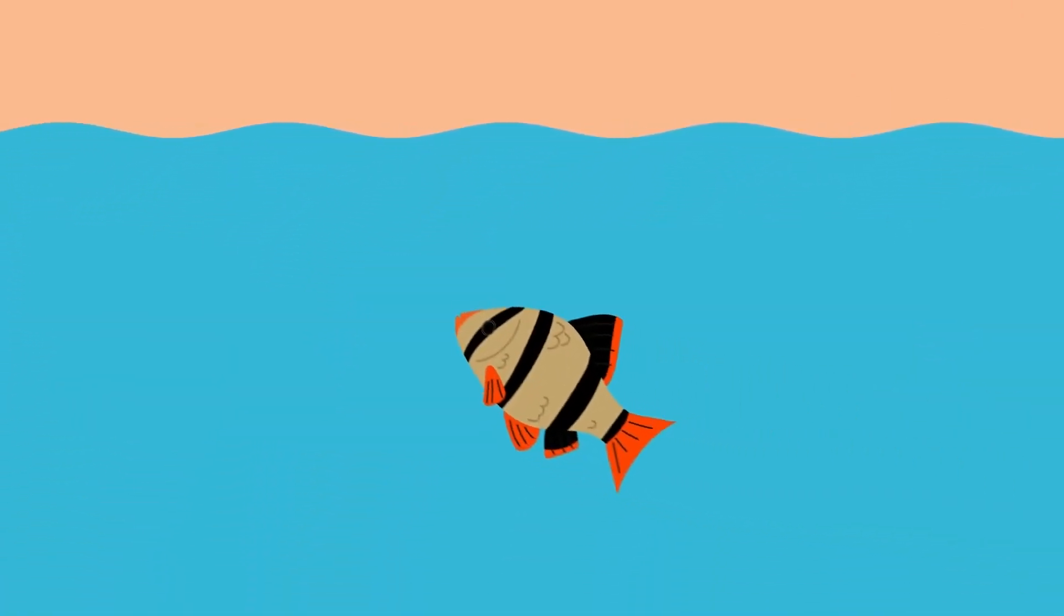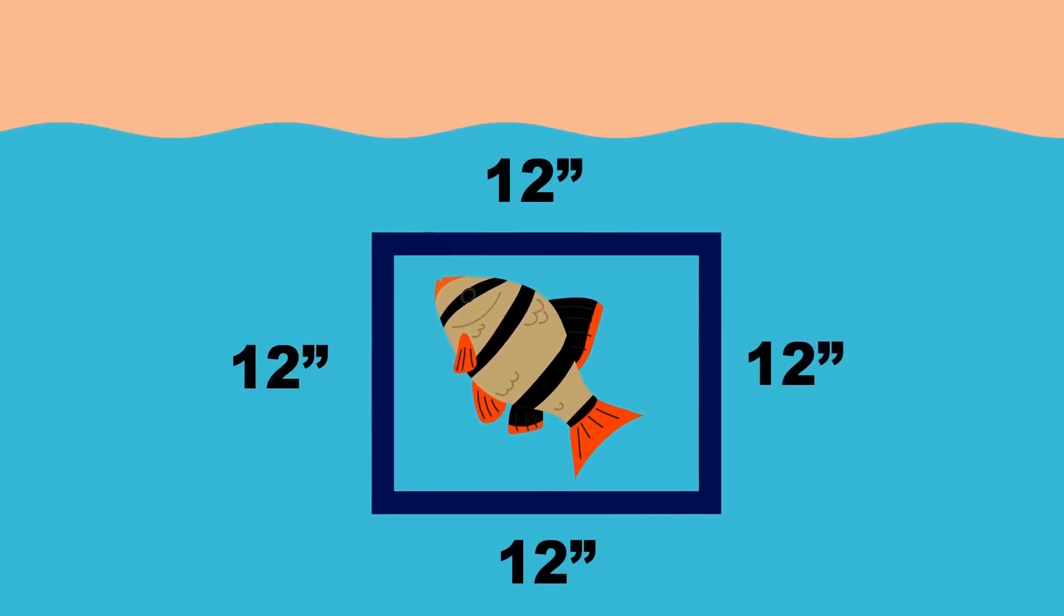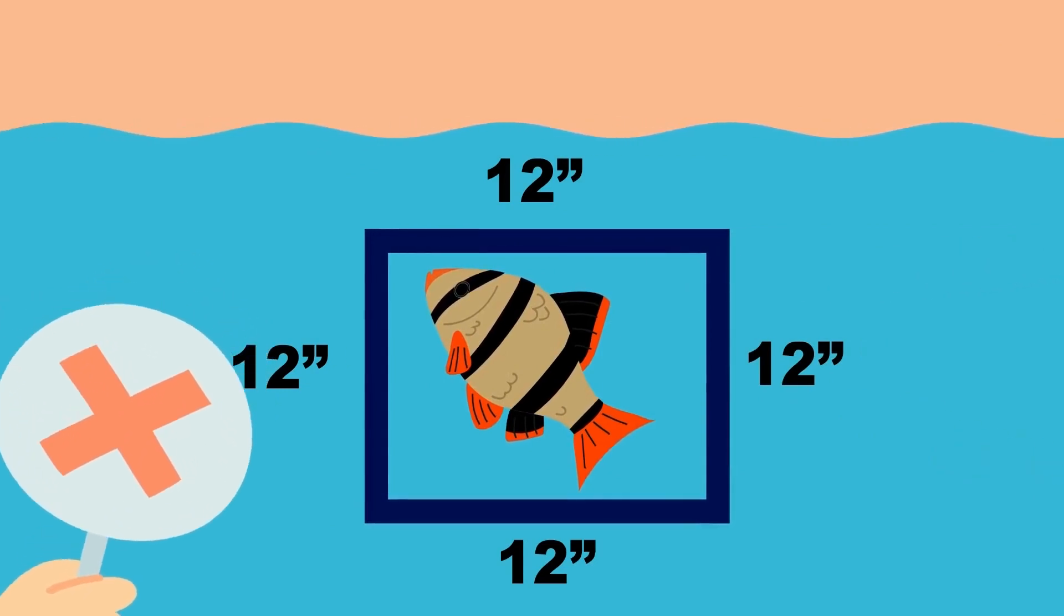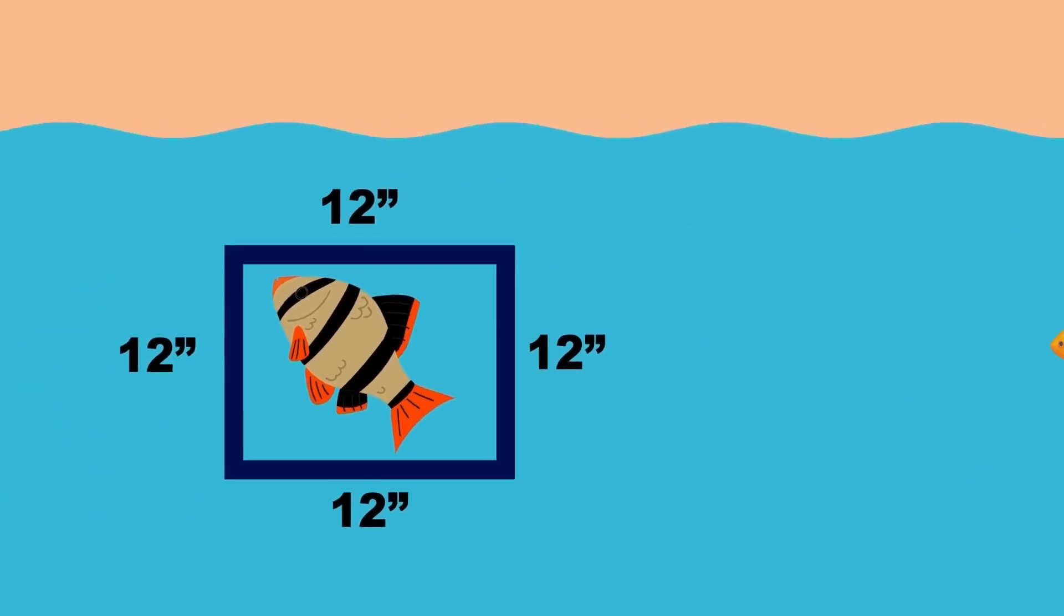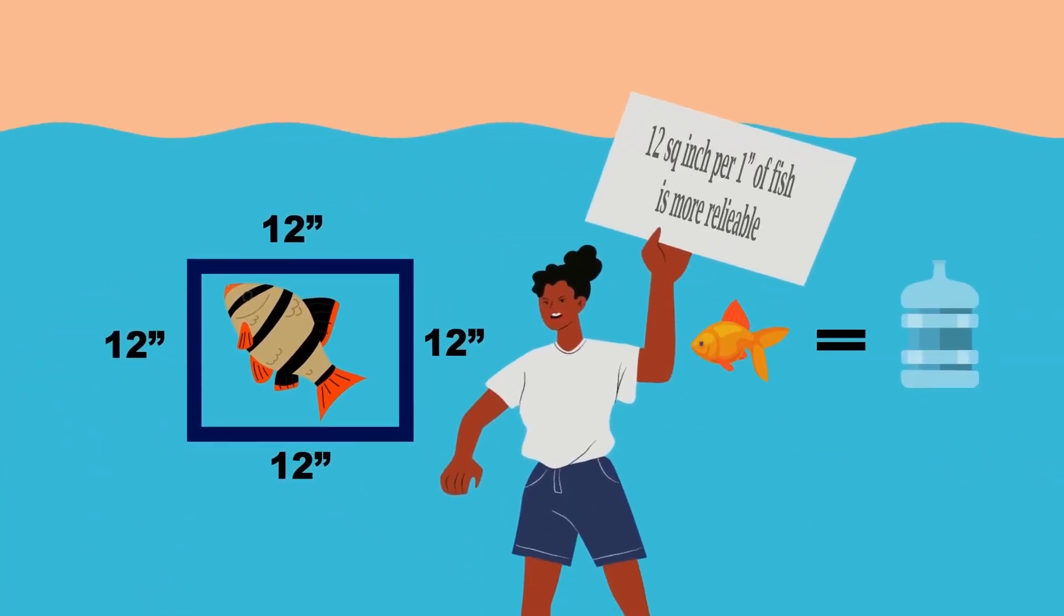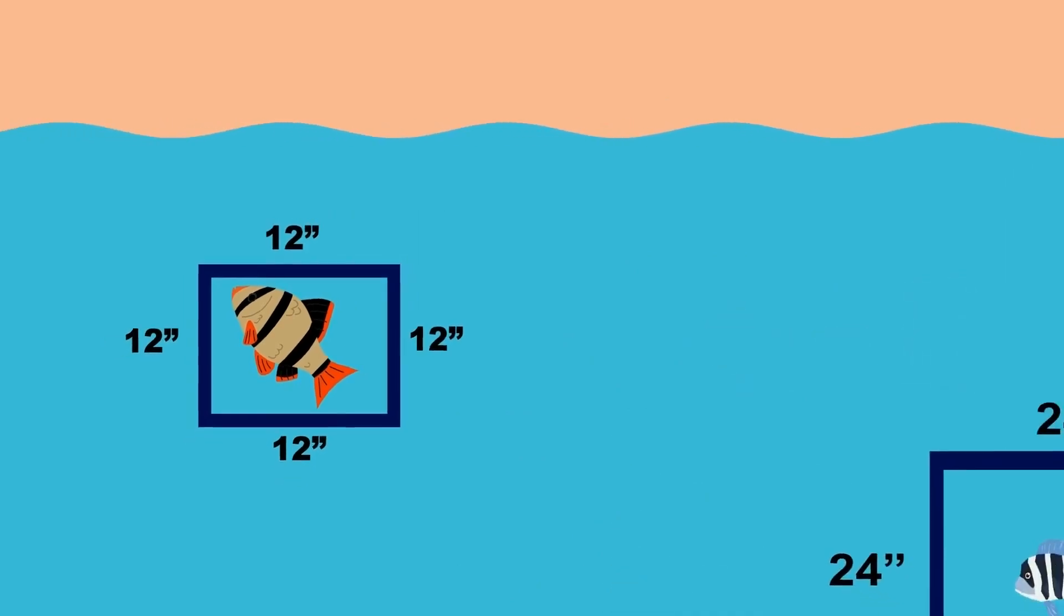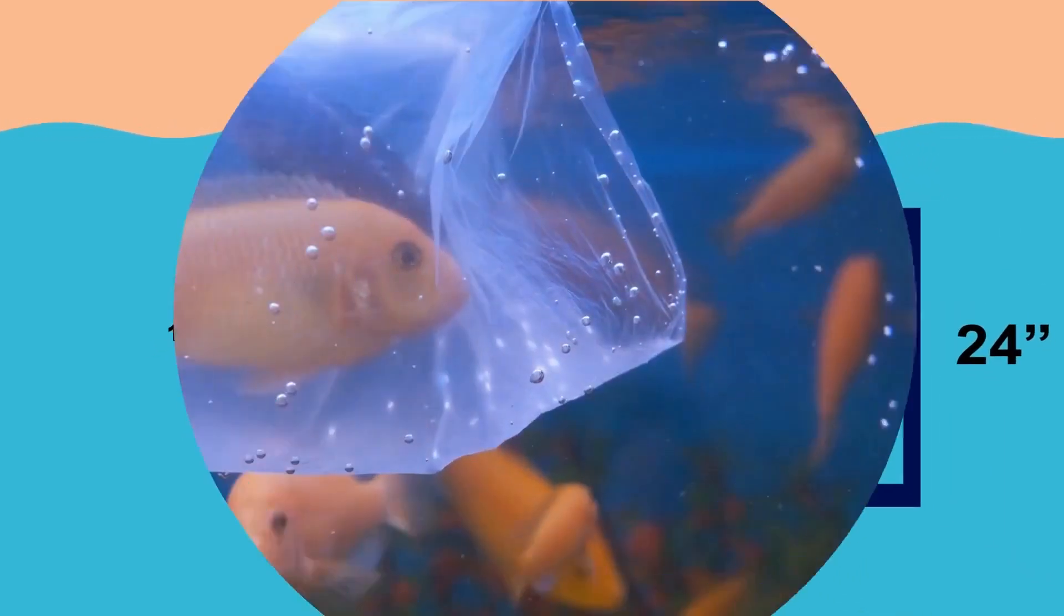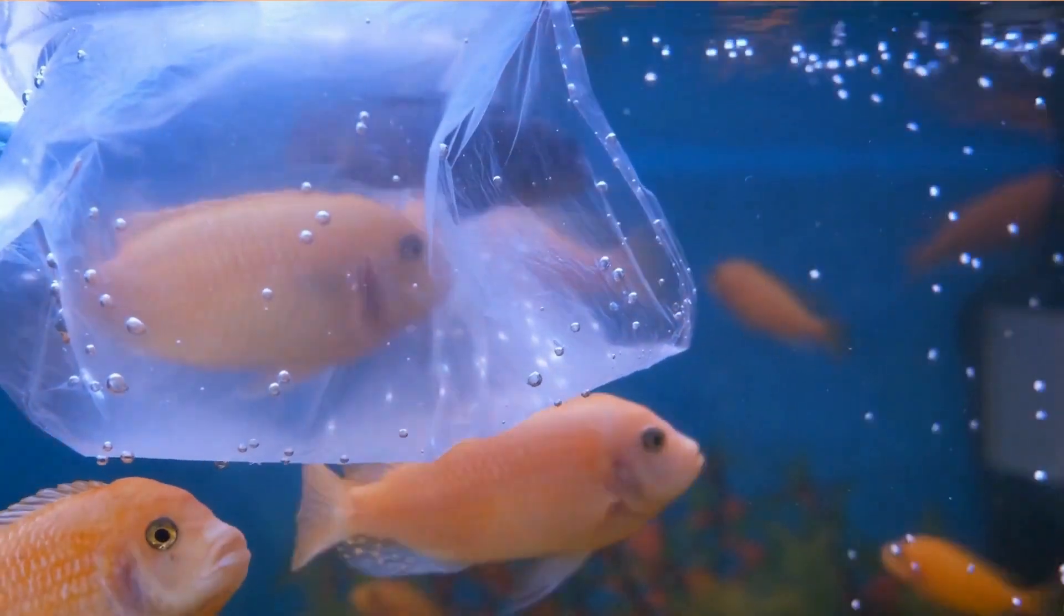There is another thumb rule of stocking aquariums based on surface area of water. According to this, you can stock aquariums with 1 inch of fish per 12 square inches of area. Like thumb rule 1, it is not applicable for every fish, but it is much more reliable than the previous one. However, apply 1 inch of fish per 24 square inches of surface area rule for big bodied fish.